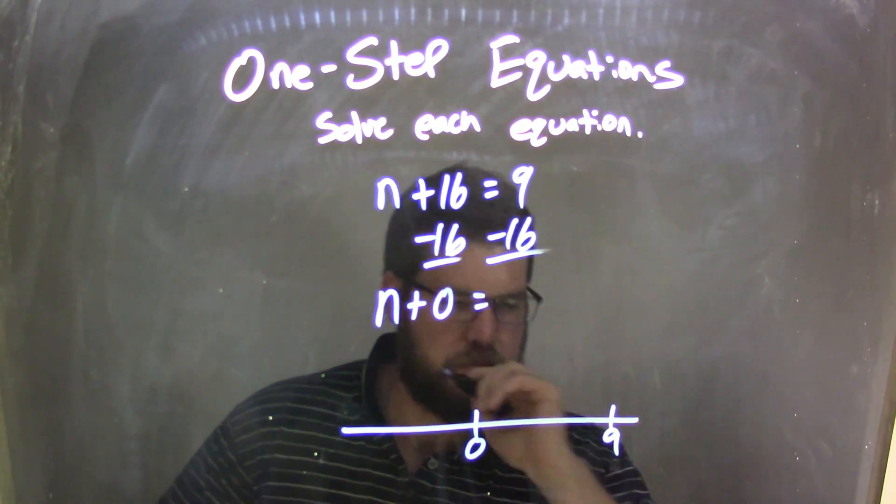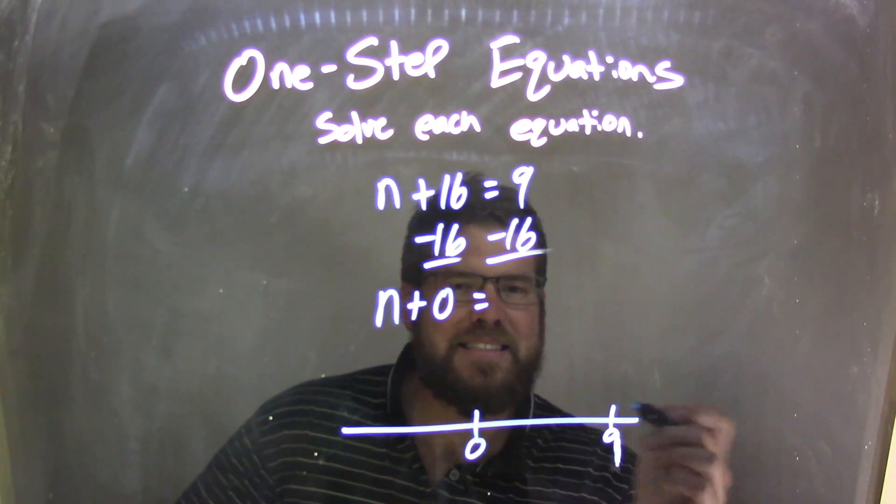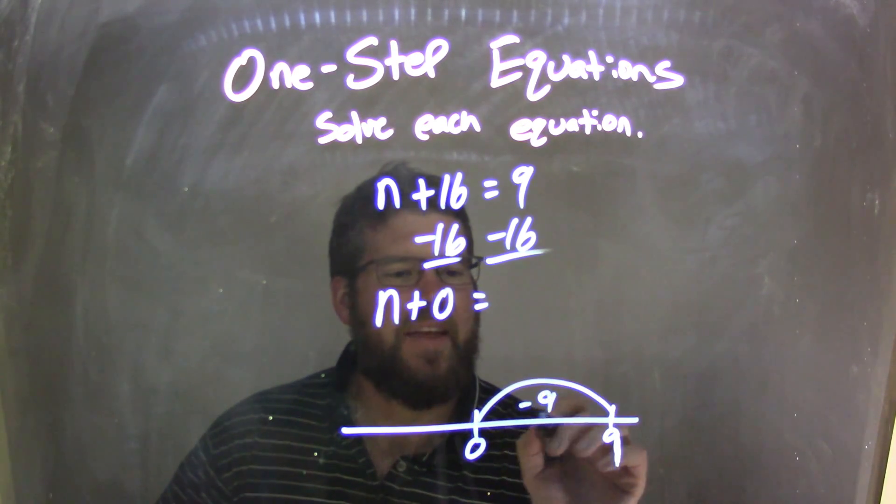So, 0 here, I have a positive 9. Well, if I'm subtracting 16, I'm going 16 units to the left. If I subtract 9, that gets me to 0.